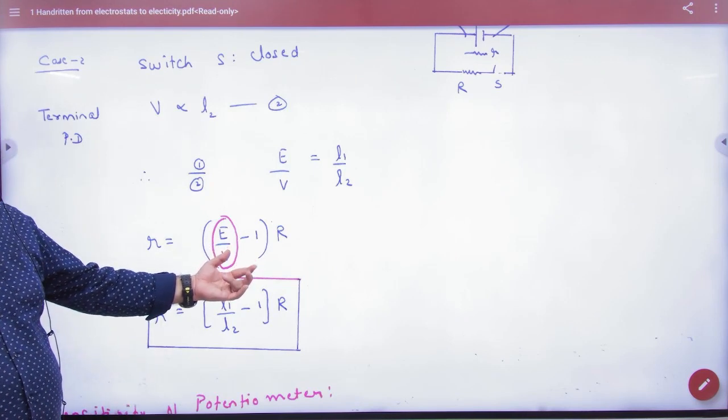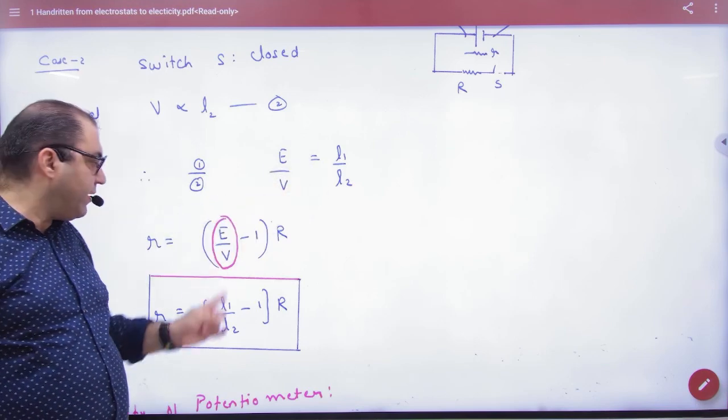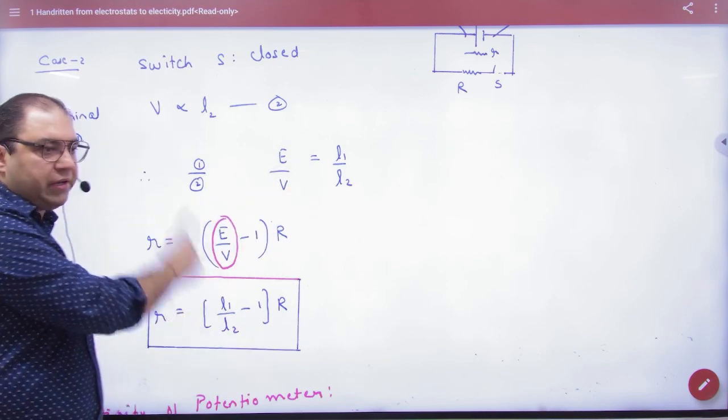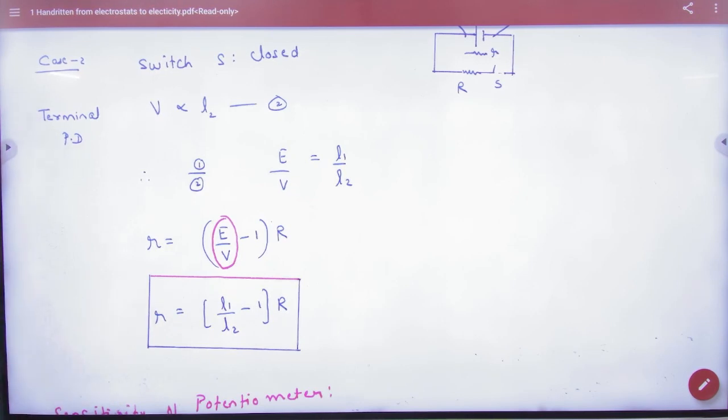E by V minus 1 into R. So you put E by V equals L1 by L2. So internal resistance will be equal to L1 by L2 minus 1 into capital R, where L1 is balancing length corresponding to EMF and L2 is balancing length corresponding to terminal potential difference.